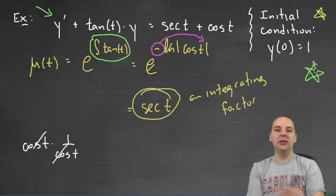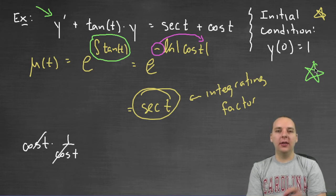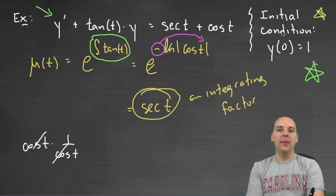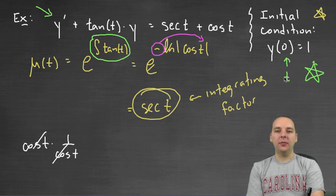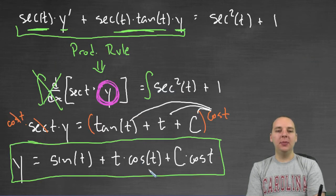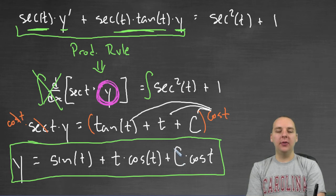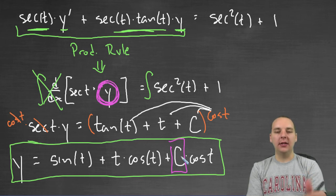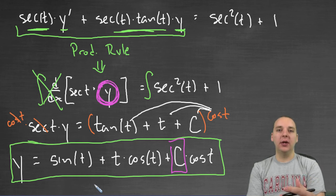Now we have to consider the initial condition. To keep this video from getting too long, I'll break it up and handle it in the next video. To give you a nudge: you have a t value and a y value from the initial condition. Let t equal zero and y equal one (or whatever it was) in your solution, figure out what C is, substitute that constant back into the generic solution, and it will satisfy both the differential equation and the initial condition.